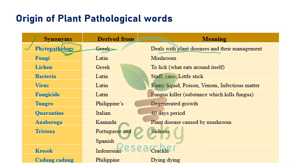Phytopathology means the study dealing with plant diseases and management. 'Phyto' means plant, 'patho' refers to causal organism or pathogen, and 'logy' means to study or disclose. So plant pathology is a branch of agriculture science that mainly deals with plant diseases and their management.